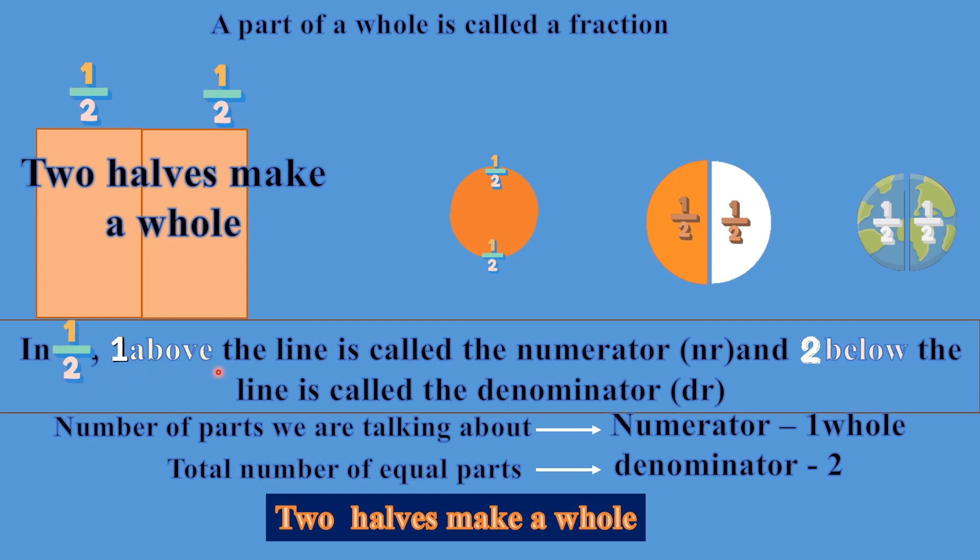Now let's write in 1/2: one above the line is called the numerator, and two below the line is called the denominator. Number of parts we are talking about is the numerator, one whole we are talking about, and the total number of parts which we are making is called the denominator, two. So two halves make a whole.